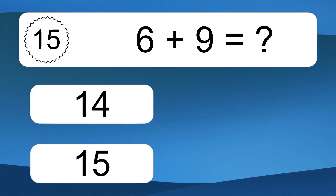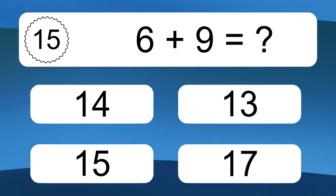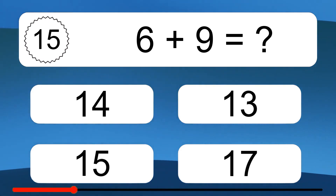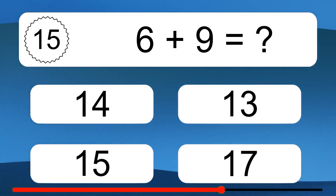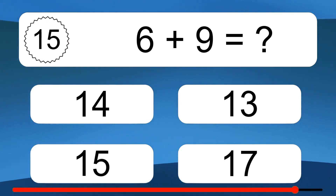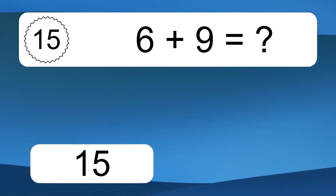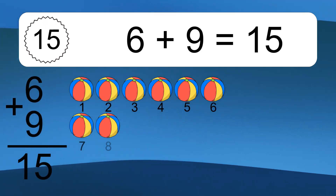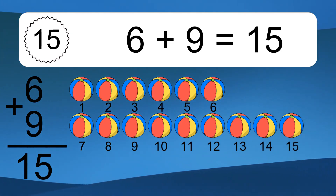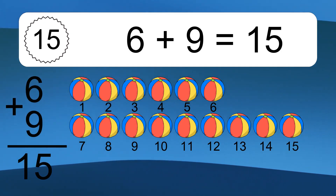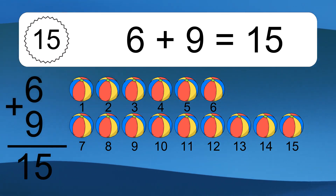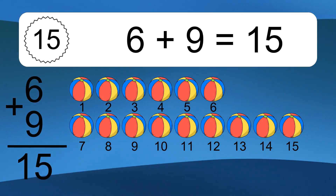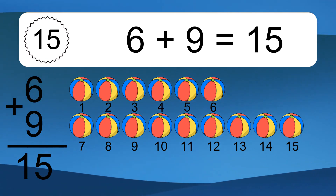6 plus 9 equals what? 6 plus 9 equals 15. Let's count it: 1, 2, 3, 4, 5, 6, 7, 8, 9, 10, 11, 12, 13, 14, 15.